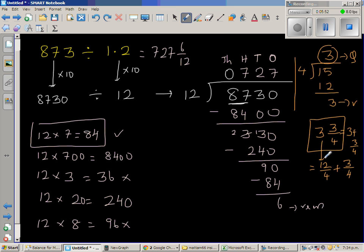So 3 is 12 quarters plus 3 quarters, which is 15 quarters. That's what we started. So this is the quotient. This is the remainder. And this is the divisor. So the answer is 727, 6 twelfths is same as 727 and 1 half.